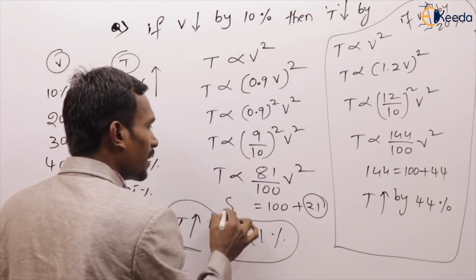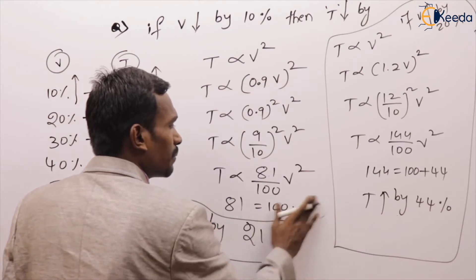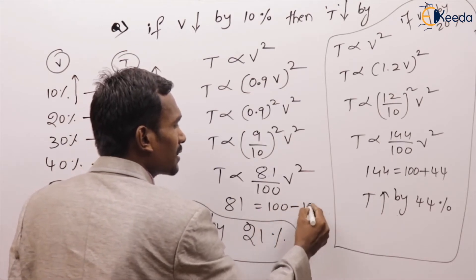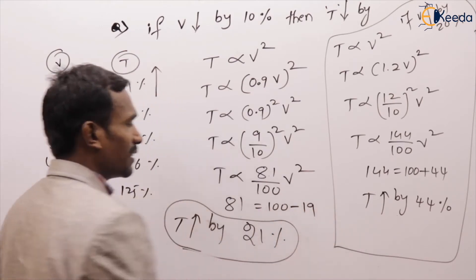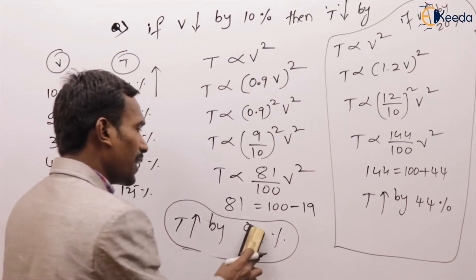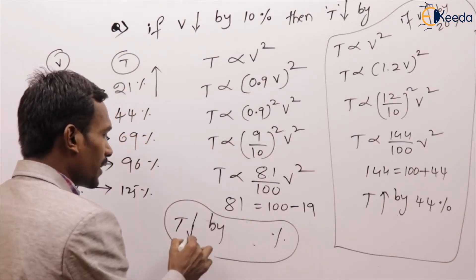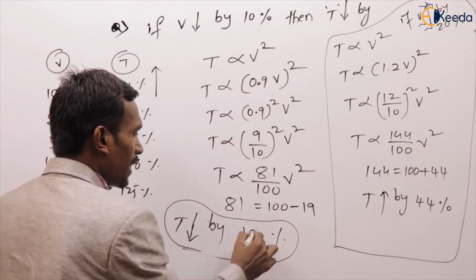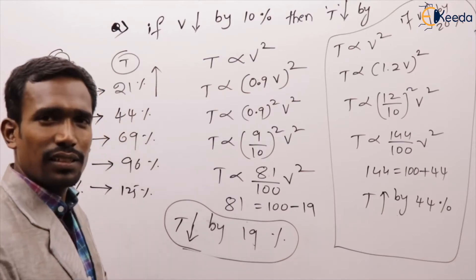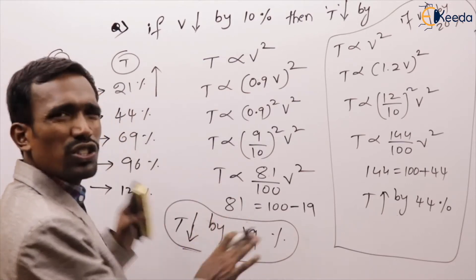81 is nothing but 100 minus 19. Hence, the torque reduced by 19%. For the same question: if it increases use (1 + x), if it reduces use (1 − x).